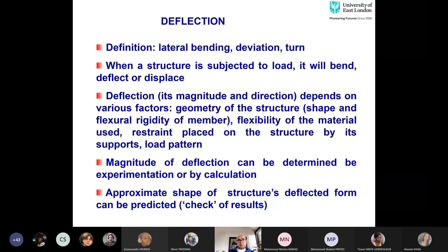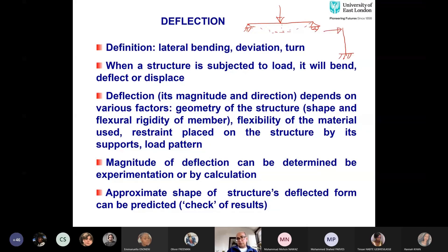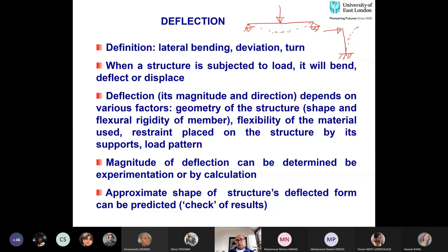Deflection is termed as lateral bending, deviation, or displacement. If you have a horizontal member and apply loading, it will bend. If you have a vertical member — a column — that is free at one end and fixed at the other, its deflected shape will appear as shown in dotted lines. The key thing to understand is that when a structure is subjected to load, it will bend, deflect, or displace. The amount of deflection relative to the size of the structure may be really very small — not visible to the naked eye — but as long as it is within the deflection limits specified by design codes, this is acceptable.